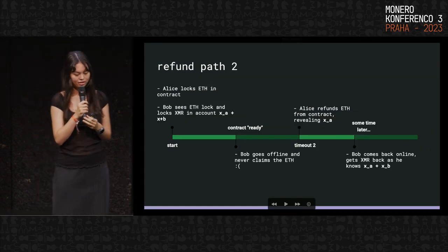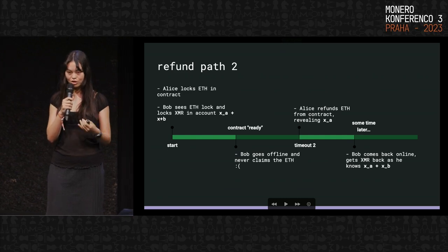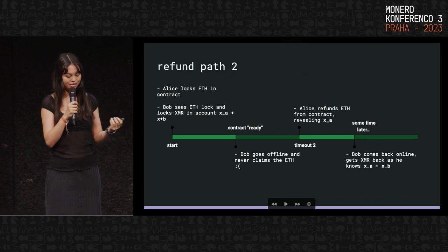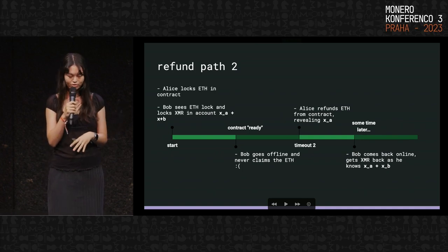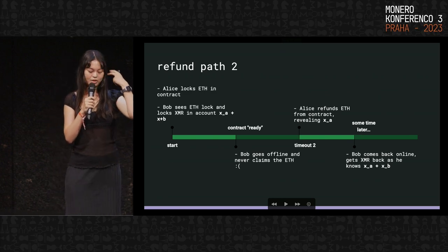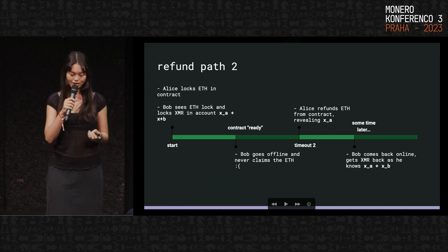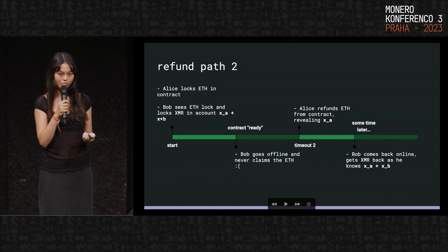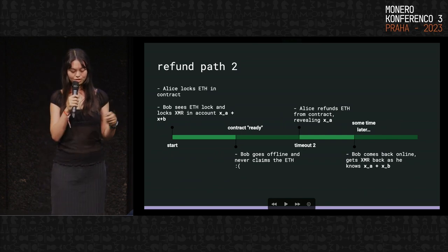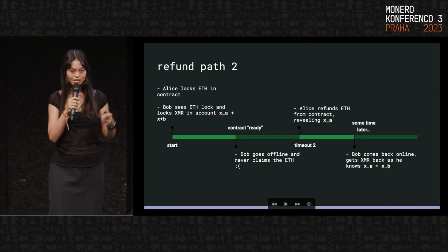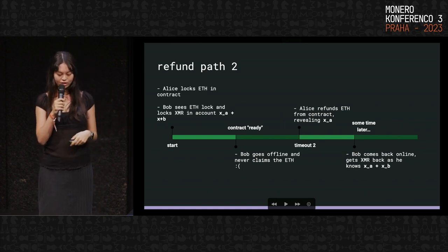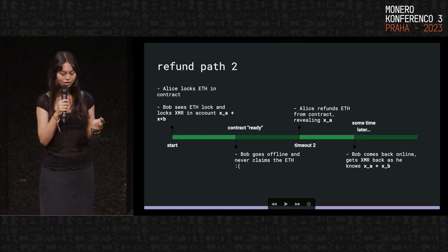The second refund path is the case where Bob never claims the ETH. Both parties successfully lock, the contract becomes ready, but Bob never claims for whatever reason. There's a second timeout where after it passes, the only possible move is Alice refunds, and Bob can't claim either. Alice watches the contract, sees nothing happened, calls refund passing in her swap secret. If Bob went offline, he'll come back online, check the contract, see the refund transaction, find Alice's swap secret, and then be able to regain the Monero that was locked.